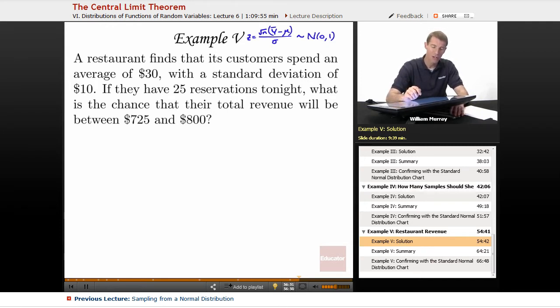But what does this have to do with this restaurant? They want to make between $725 and $800 total. What we have here is a result that has to do with the mean, the sample mean. So how do we convert that into a mean? We just divide by the customers, the number of customers, and convert that into an average amount that each customer would spend.